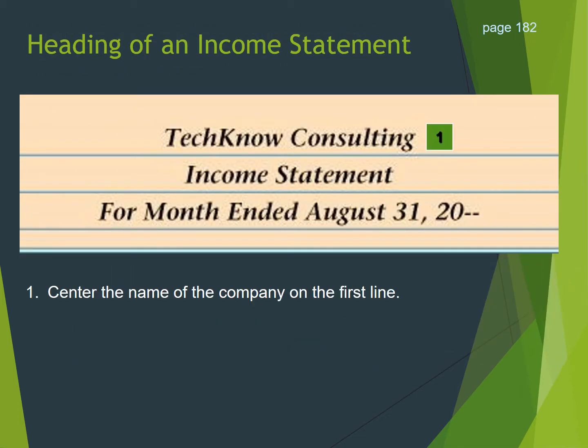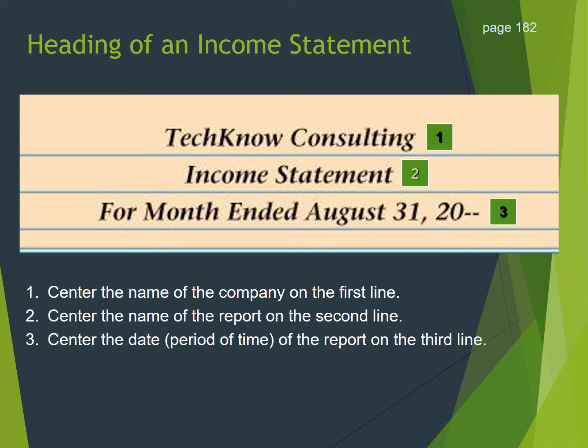The heading of the income statement: just like the worksheet, you will write the name of the company on the first line. On the second line, you will write the name of the report, which is Income Statement. And then the third line, you will write 'For Month Ended August 31st,' or whatever the date is, and then the year. Notice that all of these are proper nouns, so you need to capitalize each of these words.